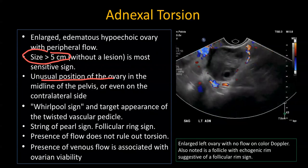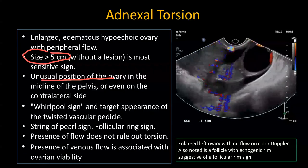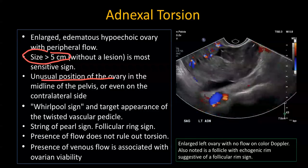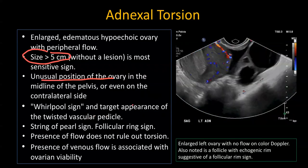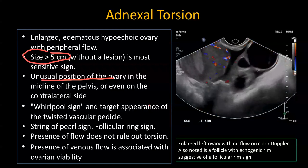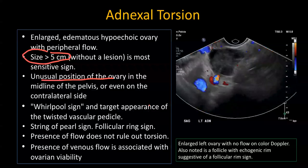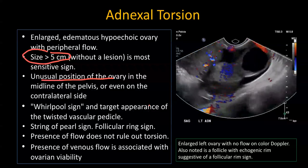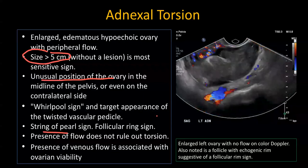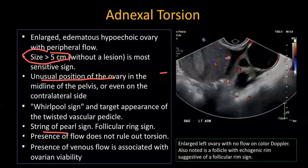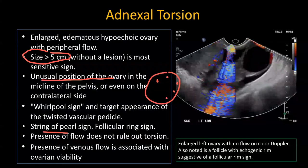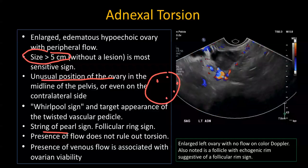Another finding is an unusual position of the ovary — if the ovary is displaced to the midline or even to the opposite side and is bulky, this suggests torsion. The whirlpool sign is twisting of the ovarian pedicle, somewhat challenging to visualize on ultrasound but can also be used on CT. The string of pearl sign occurs when the ovary is enlarged and edematous and the follicles are displaced towards the periphery. Note that this appearance can also be seen in polycystic ovaries, which is a pitfall.